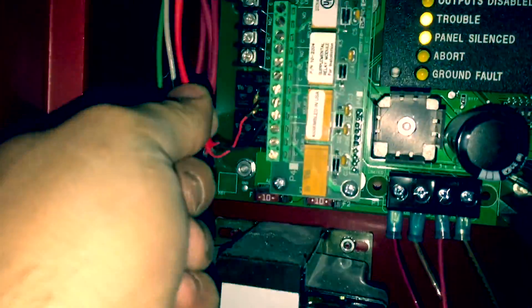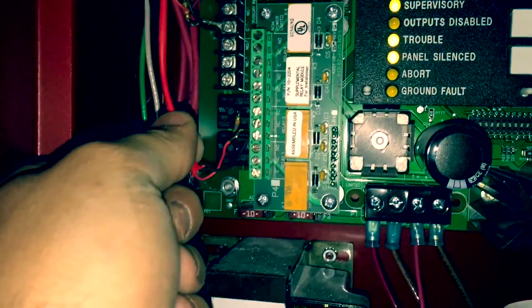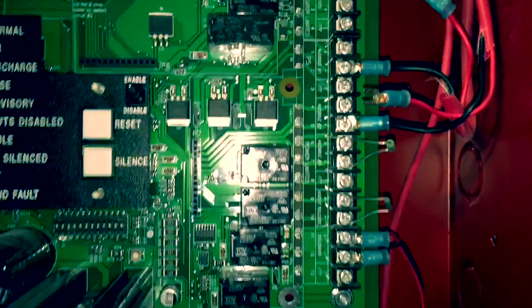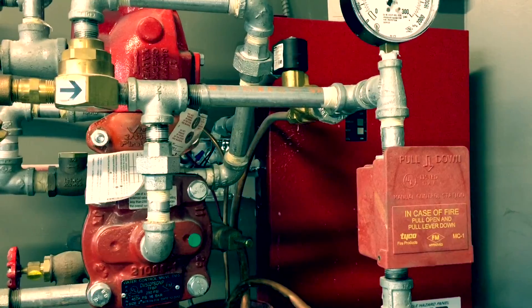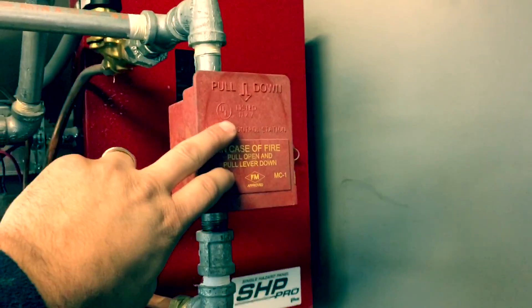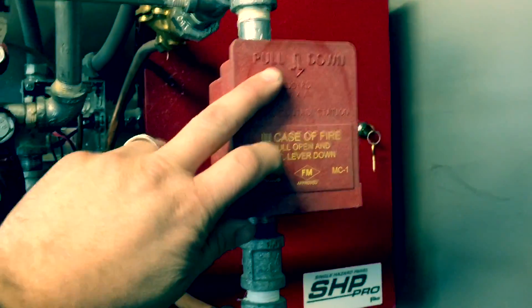Went to the panel inside, pulled the circuit there so the auto is off now. Got the system isolated and shut down, got the system on test. We're going to pull the manual pull to see if it works and if it activates the system. We're going to pull the pull station down to activate the system.